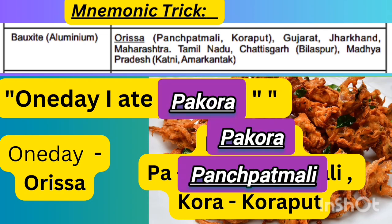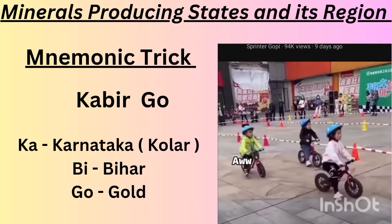Next one is also about bauxite. The shortcut is: 'One day I ate Bakura.' 'One day' — O stands for Orissa. In 'Bakura' — 'Ba' stands for Panchpat Mali, 'Kura' stands for Koraput. So Orissa's bauxite regions include Panchpat Mali and Koraput.